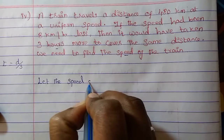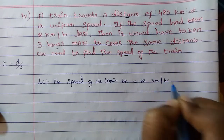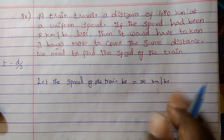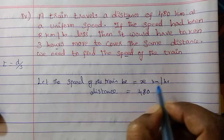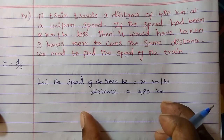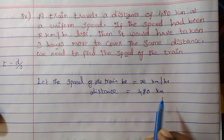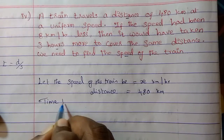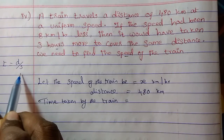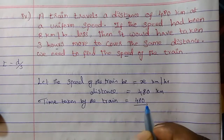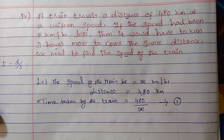Let the speed of the train be X km per hour. Normally every day the train runs at X km per hour. The distance covered is 480 km. So the time taken by the train at normal speed is: time = distance / speed = 480 / X km. Consider this as equation 1.